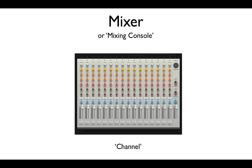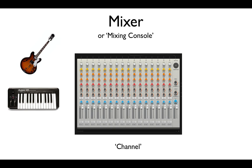Each channel contains a different musical instrument sound, so let's add some musical instruments and connect them to the mixer. First we'll add a guitar, then a keyboard and then a microphone to sing into. We connect these to the mixer using cables. The cables go from the instrument into the top of the mixer, so we will connect the guitar to channel 1, the keyboard to channel 2 and the microphone to channel 3.